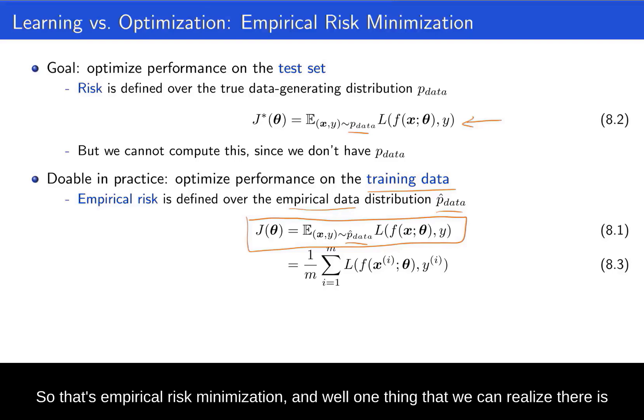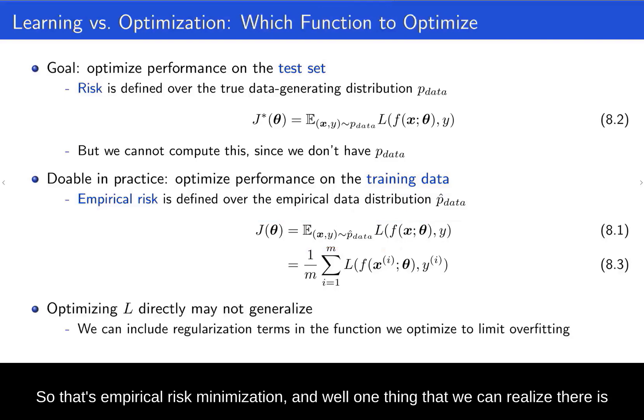So that's empirical risk minimization. And one thing that we can realize there is that maybe actually optimizing L directly on the training data is not the best thing to do because that may not generalize. So we can include regularization terms in the function that we optimize in order to limit overfitting.